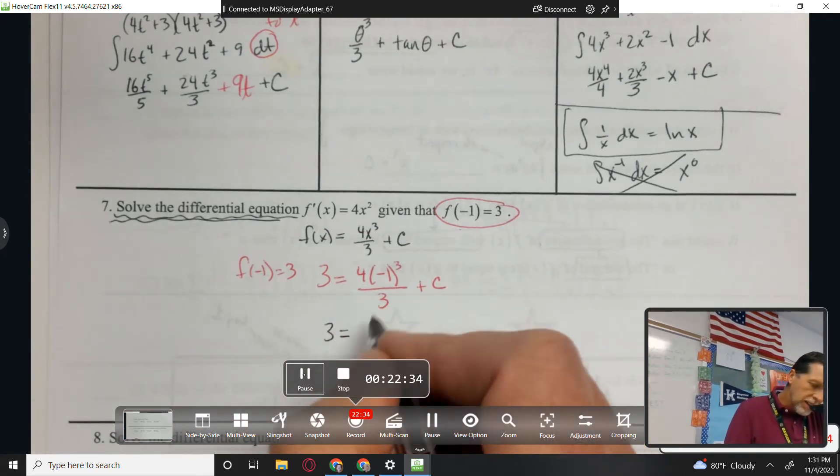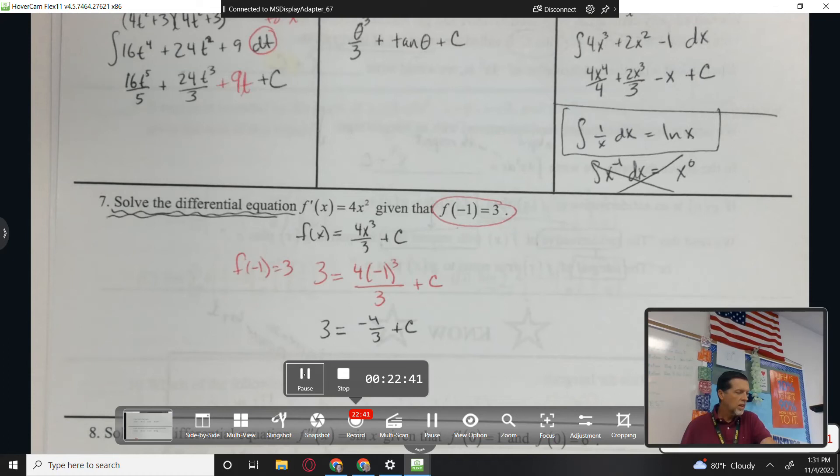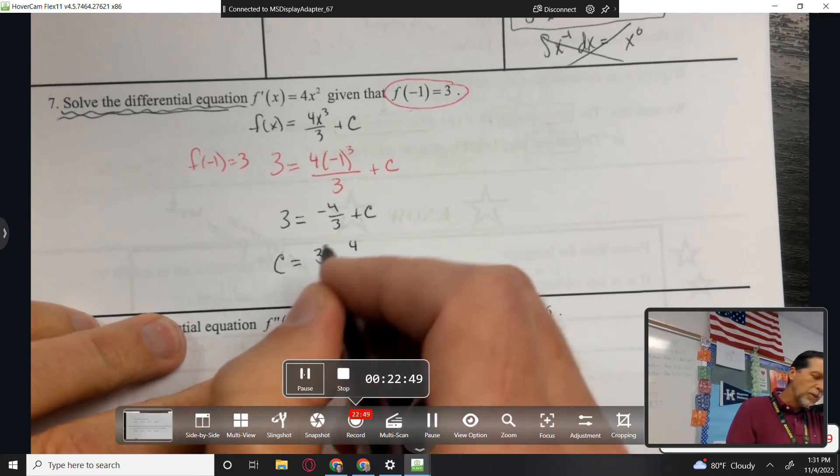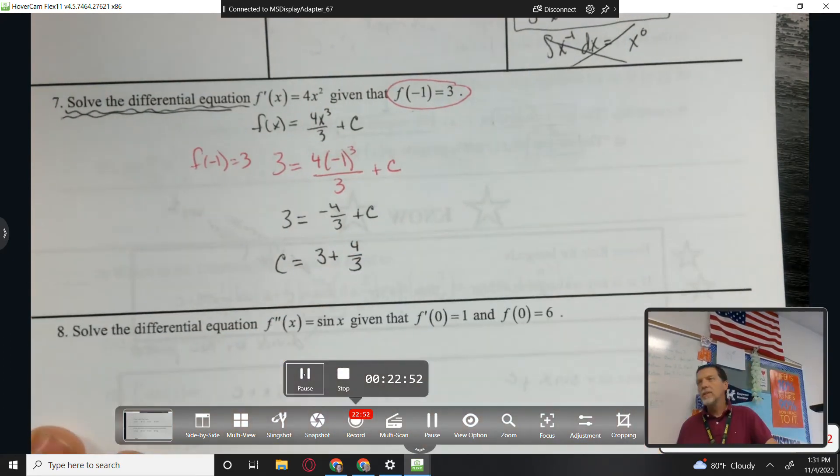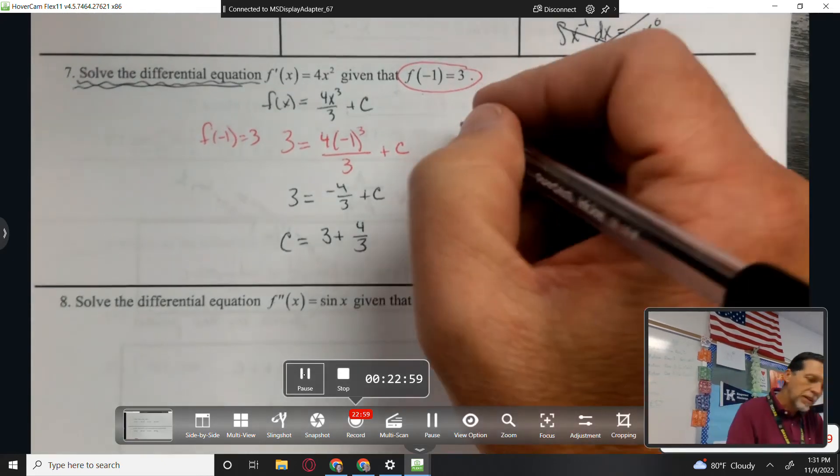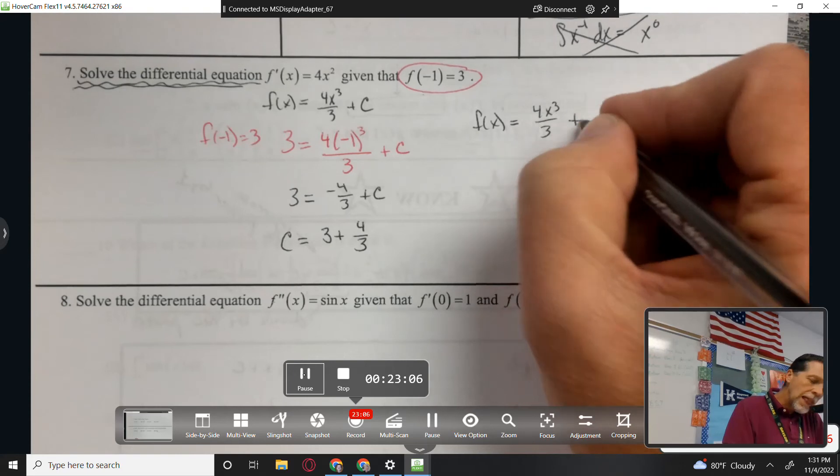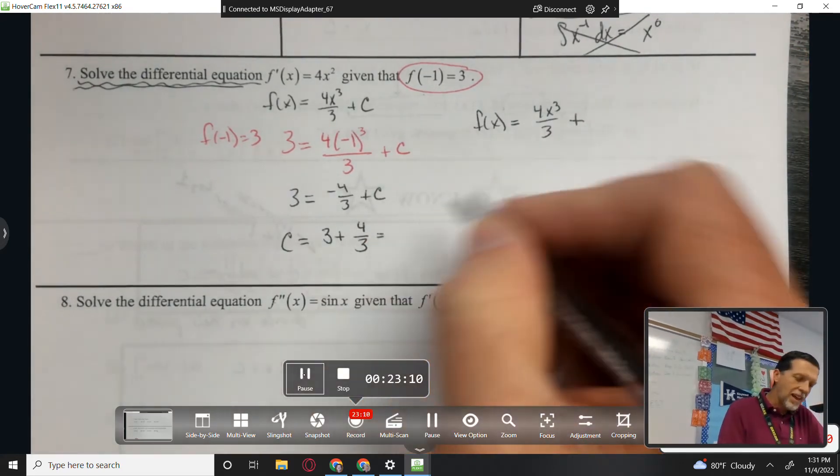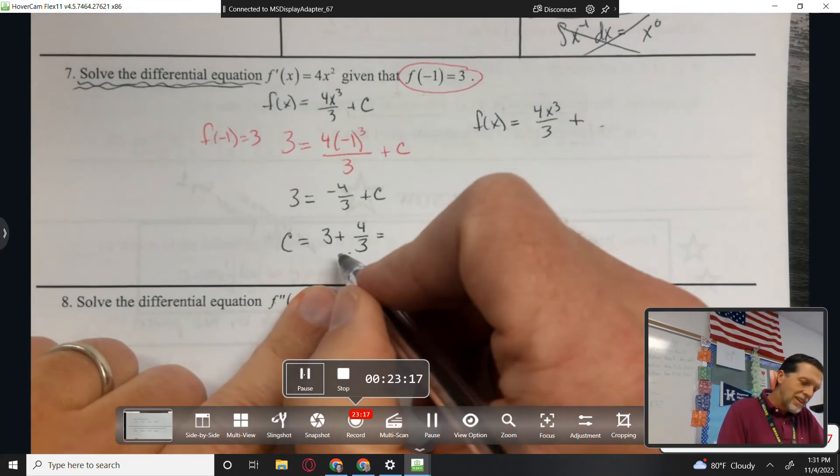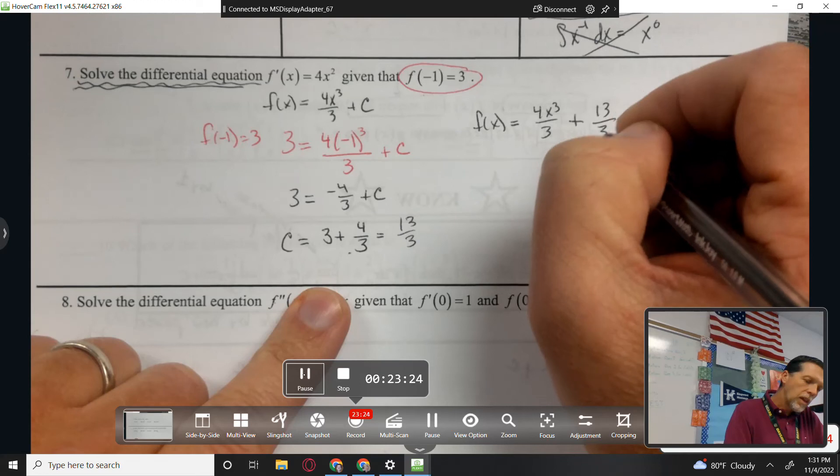Let's see. So 3 equals negative 4 thirds plus c. Being a fan of safe stops, you could just say that c is 3 plus 4 thirds and stop there and be good with it. Well actually, you couldn't stop there because you haven't told me what the function is yet. The function is 4x cubed over 3 plus c. I've identified what c is. You could, you could say plus c and you've identified what c is. You could get away with that. I'm going to go ahead and get a common denominator. 9 thirds plus 4 thirds is 13 thirds. So there's my answer.